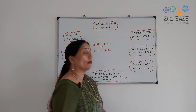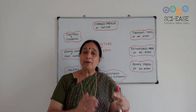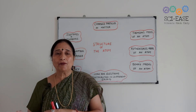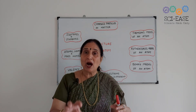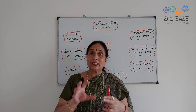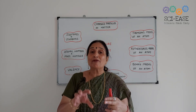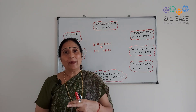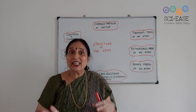Next is Rutherford's model of an atom. There were some drawbacks in Thomson's model, so Rutherford performed an experiment — the scattering of alpha particles by gold foil — and he told that the positively charged mass is concentrated in the center of an atom, meaning protons are present in the center. He also told that in an atom there are large empty spaces. Still, there were some discrepancies or drawbacks in his model.